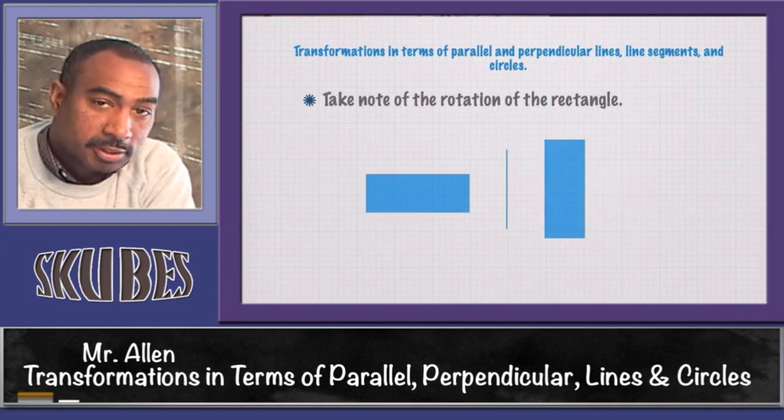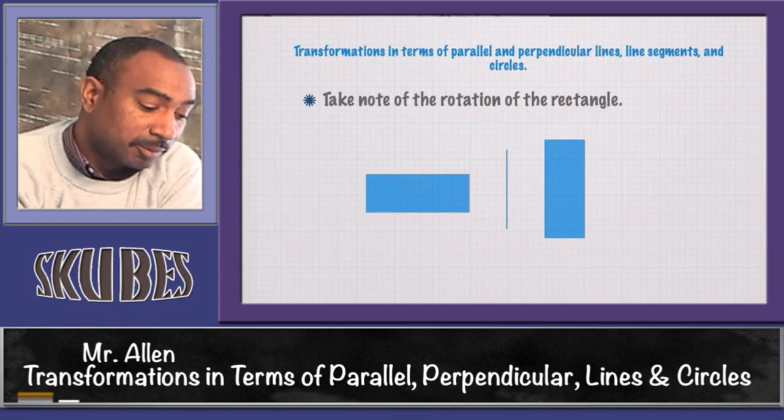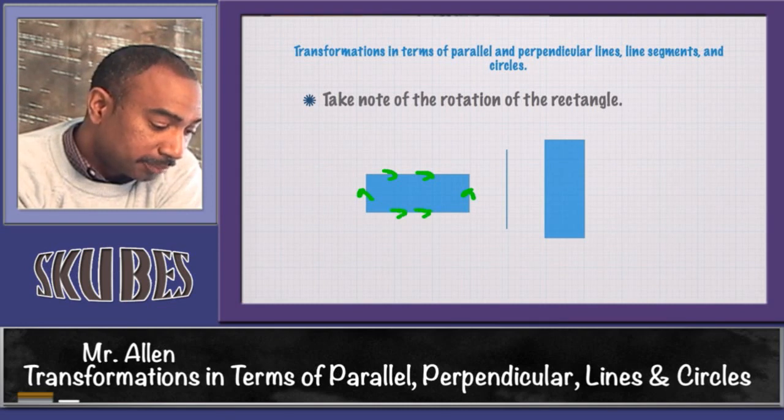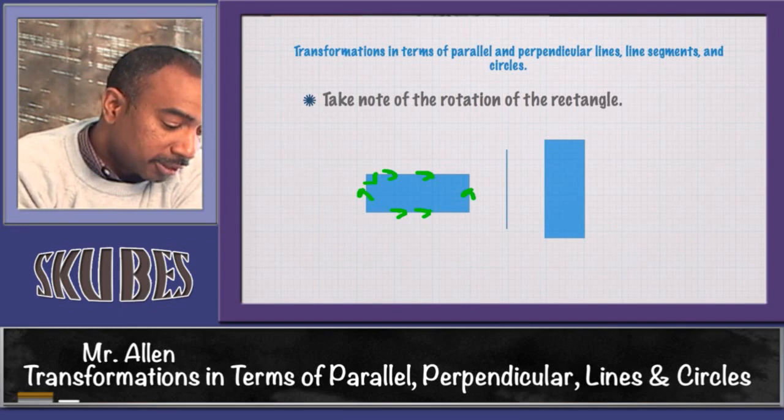Take note of the rotation of the rectangle. Again, a rectangle—we know that opposite sides are parallel as well as congruent, and the angles are 90 degrees.